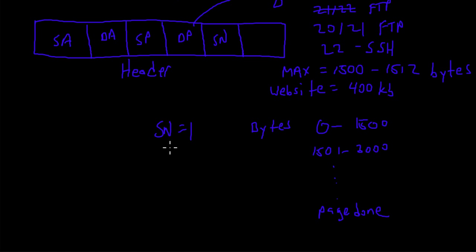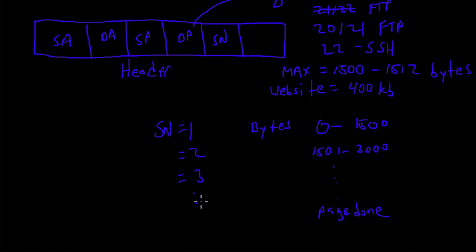Sequence number one, two, three and so on. Normally these sequence numbers don't follow nice small numbers — they'll be very large numbers and the router just keeps track of what the next sequence number is. But for demonstration purposes we say sequence one, two, three, four and it keeps going until the web page is done.